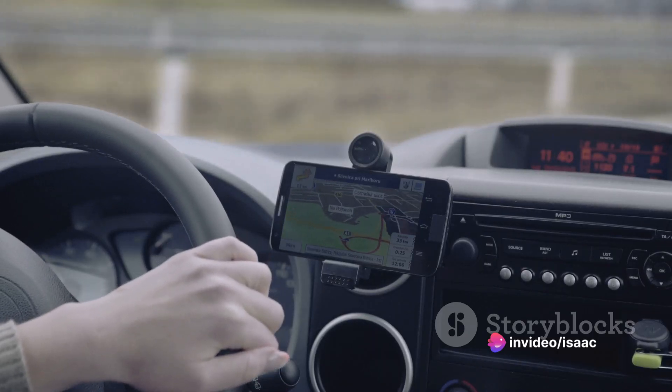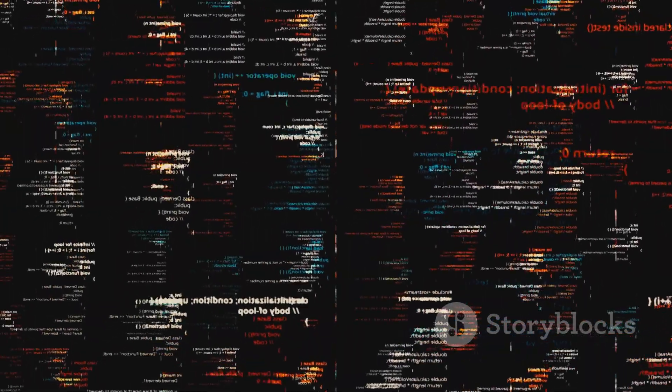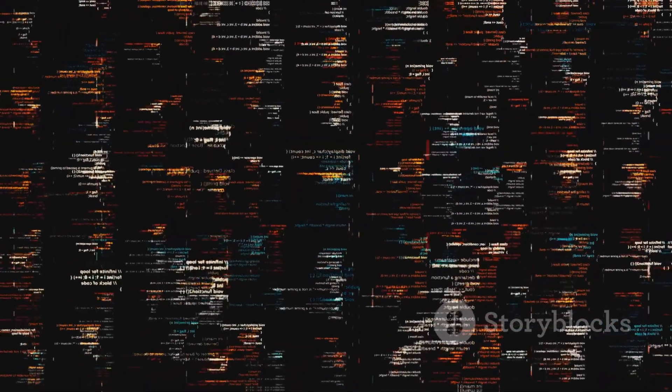Kociemba's algorithm is like a sophisticated GPS system for this maze. It calculates the shortest route from the scrambled cube to the solution, and it does so in two phases.